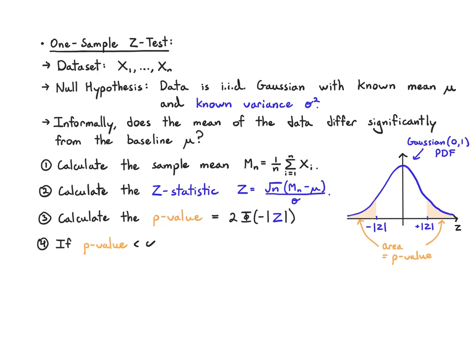If that p-value is less than alpha, I reject the null. If the p-value is greater than or equal to alpha, I fail to reject the null.